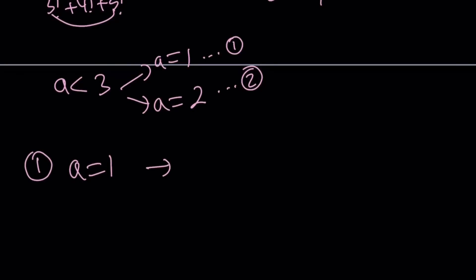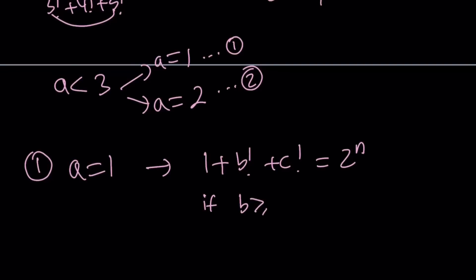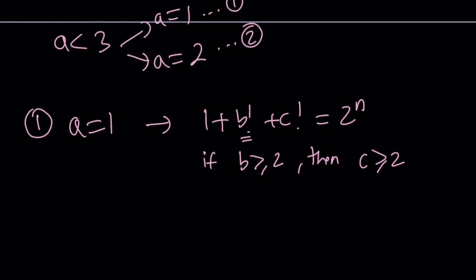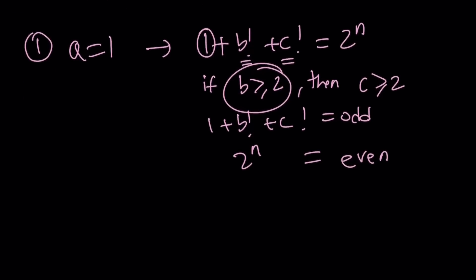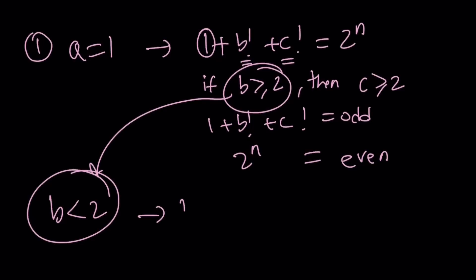In this case, our equation turns into 1 factorial plus b factorial plus c factorial equals 2 to the power n. Notice that if b is greater than or equal to 2, then c is also going to be greater than or equal to 2. Both b factorial and c factorial are going to be even, and when you add 1, you get an odd number. So 1 plus b factorial plus c factorial is going to be odd, but 2 to the power n is even — that can't work. So b must be less than 2, giving us b equals 1.